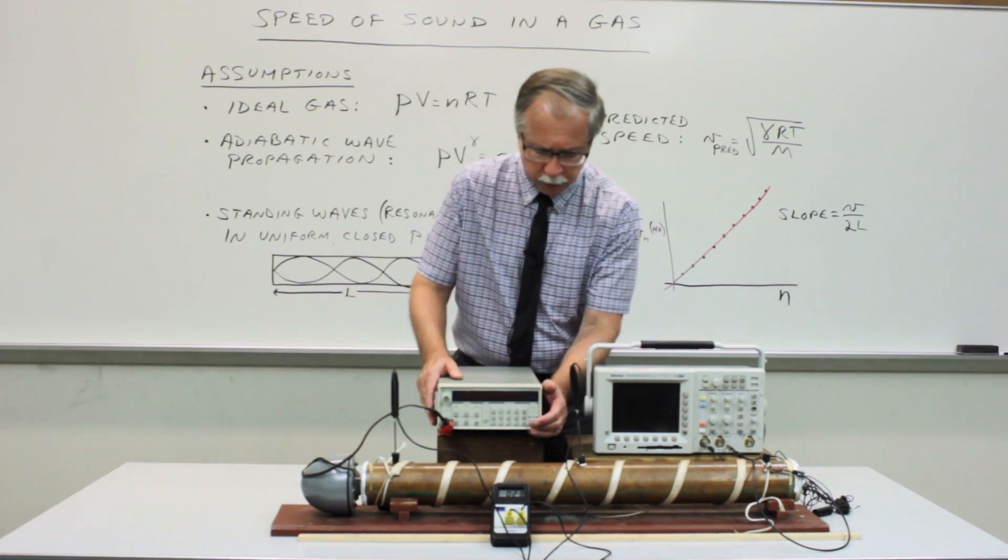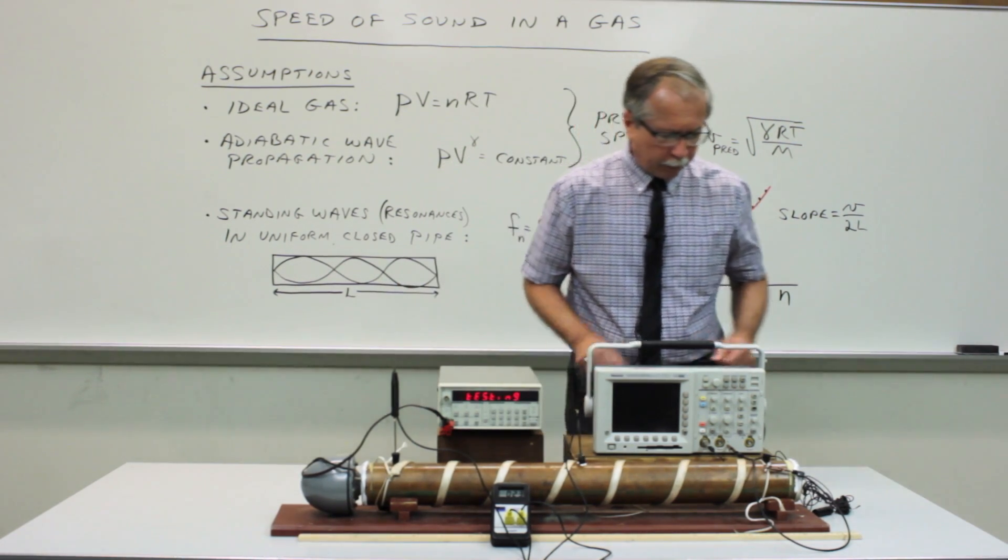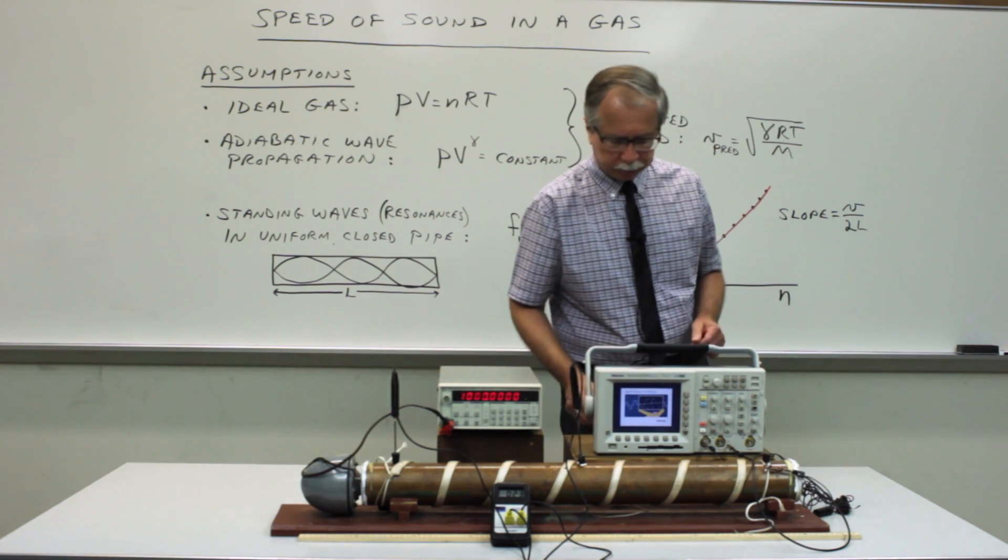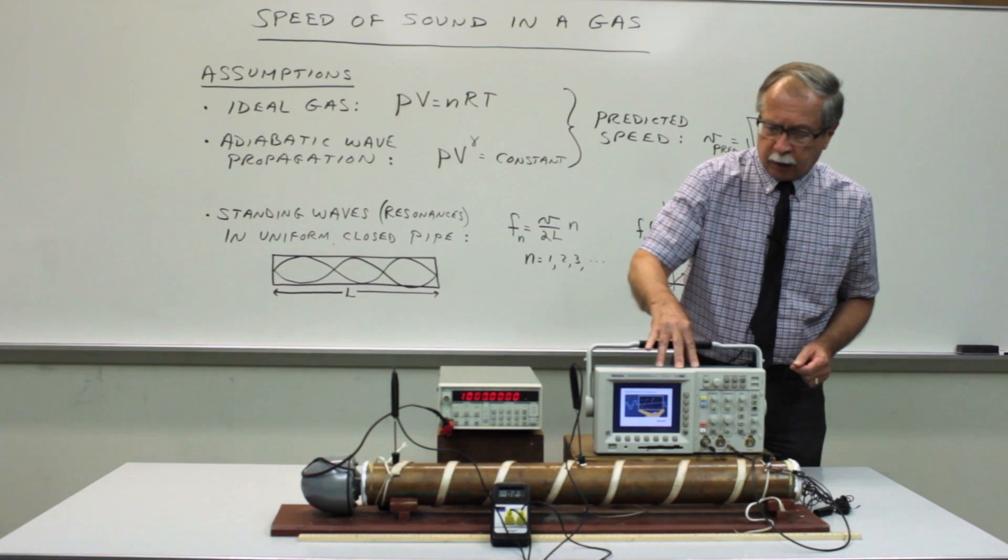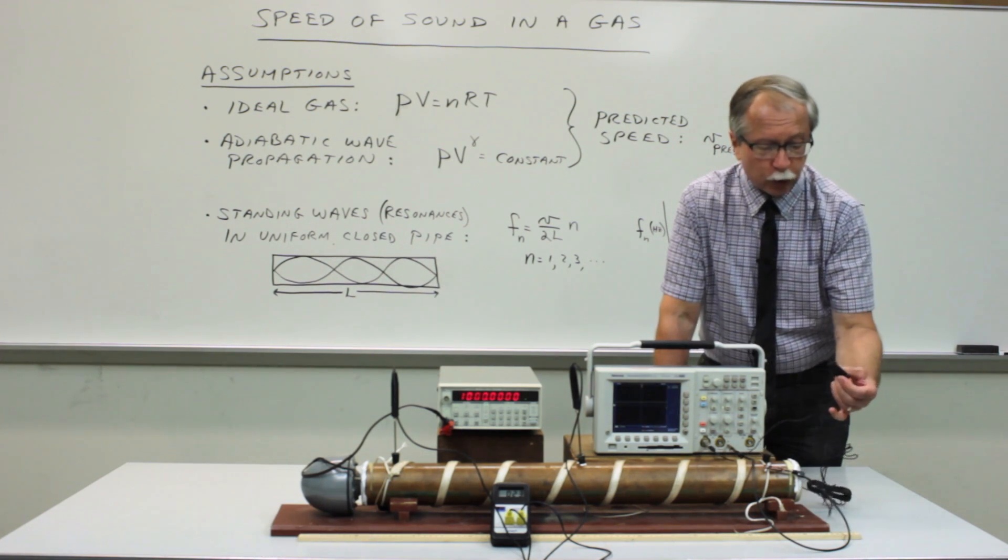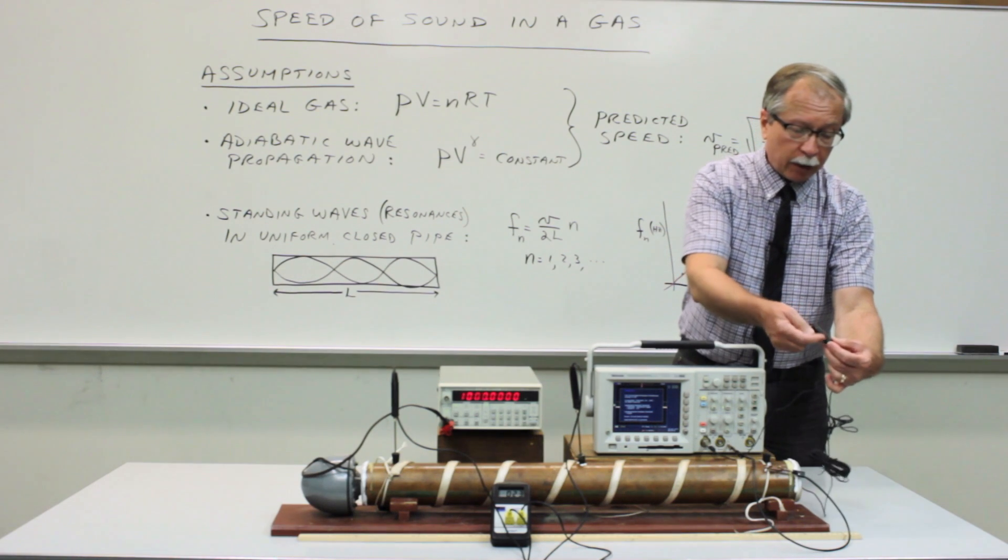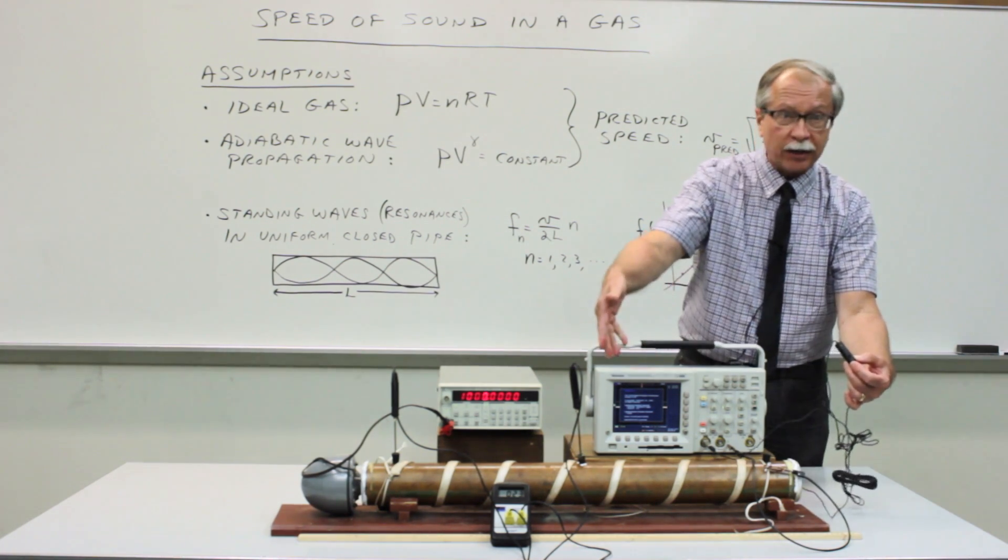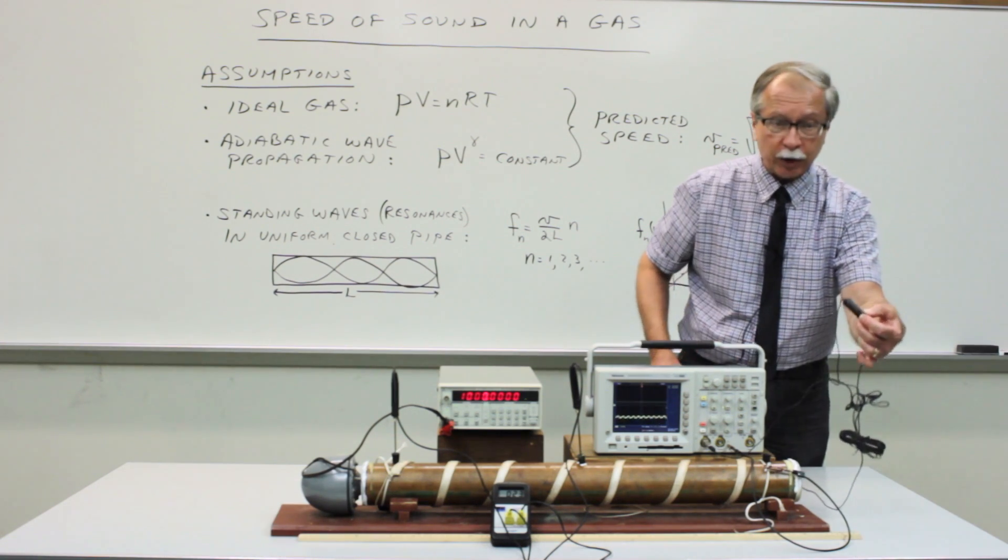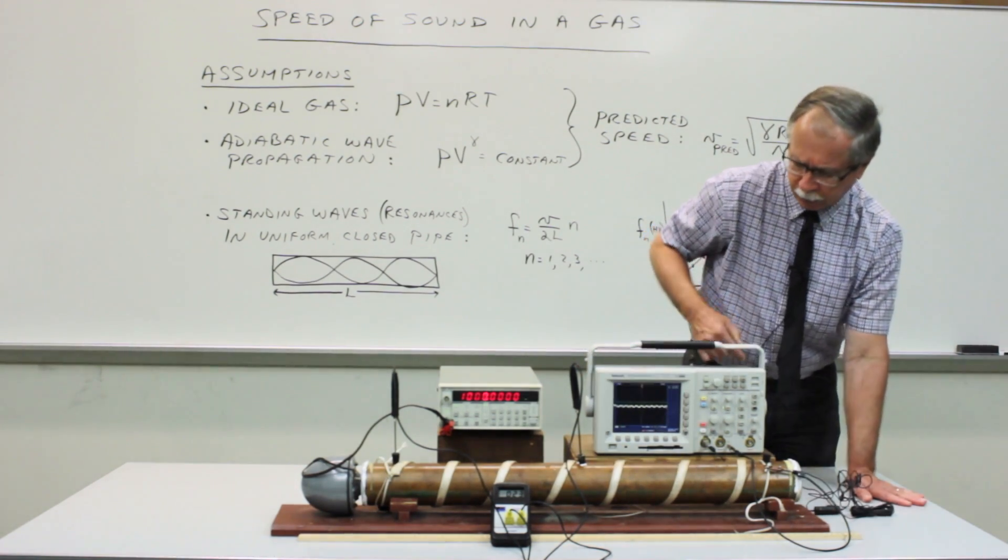So we'll just turn on the function generator and create some sound and then turn on the oscilloscope to detect the waves. Now one of the most common pitfalls in doing this experiment is forgetting to turn on the microphone. So most of the microphones in the collection are battery powered and many of them have an inline switch. If you forget to turn on that switch, you won't get anything at all on the oscilloscope. So do remember to check to be sure that the switch is turned on if you have the type of microphone that has a switch.